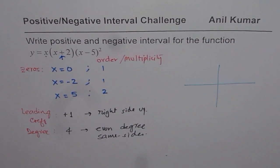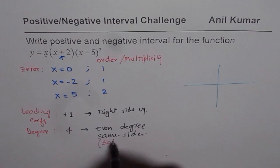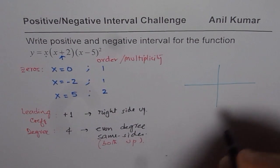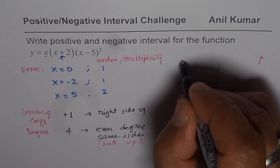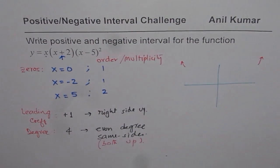That basically means end behavior. So both upwards. So we have got an end behavior here. Both are upwards and we know zeros and their multiplicity.